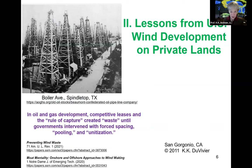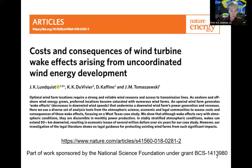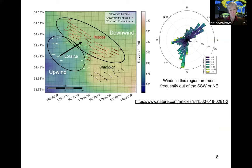What lessons can we learn? In US oil and gas development, the rule of capture and competitive leasing created waste — extra derricks that weren't needed and prevented full resource recovery. Governments intervened with forced spacing, pooling, and unitization. Similarly, in California, people weren't aware of wakes and put turbines right next to each other, resembling the oil and gas situation.